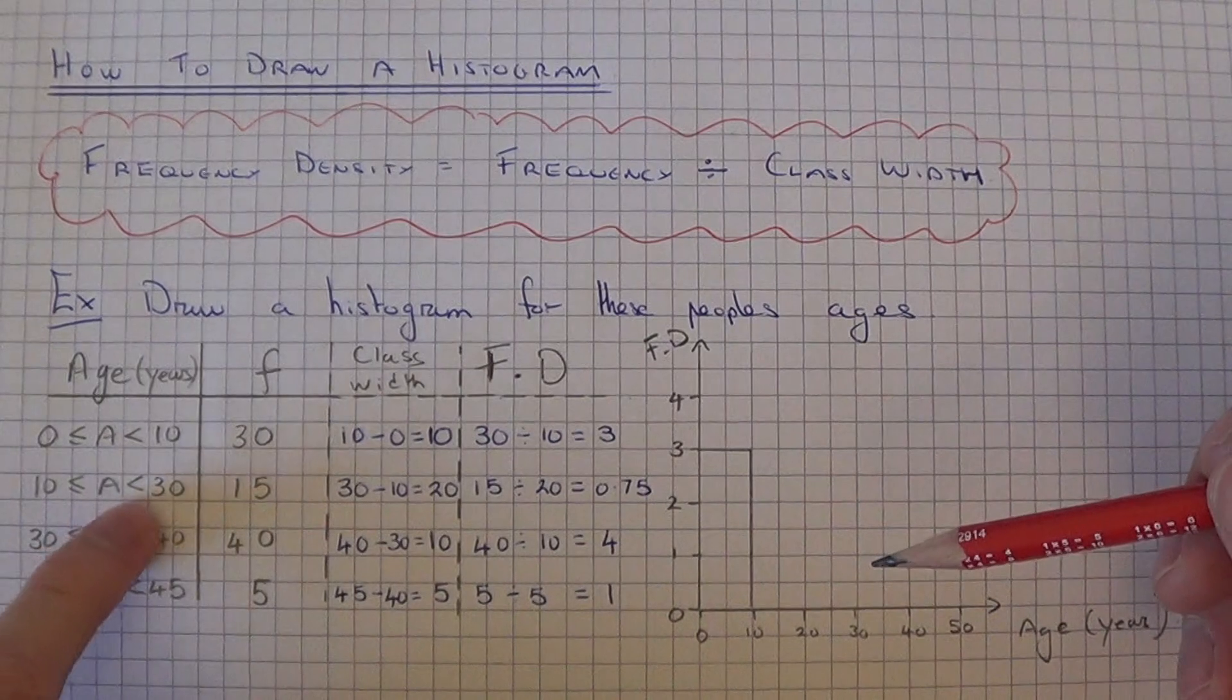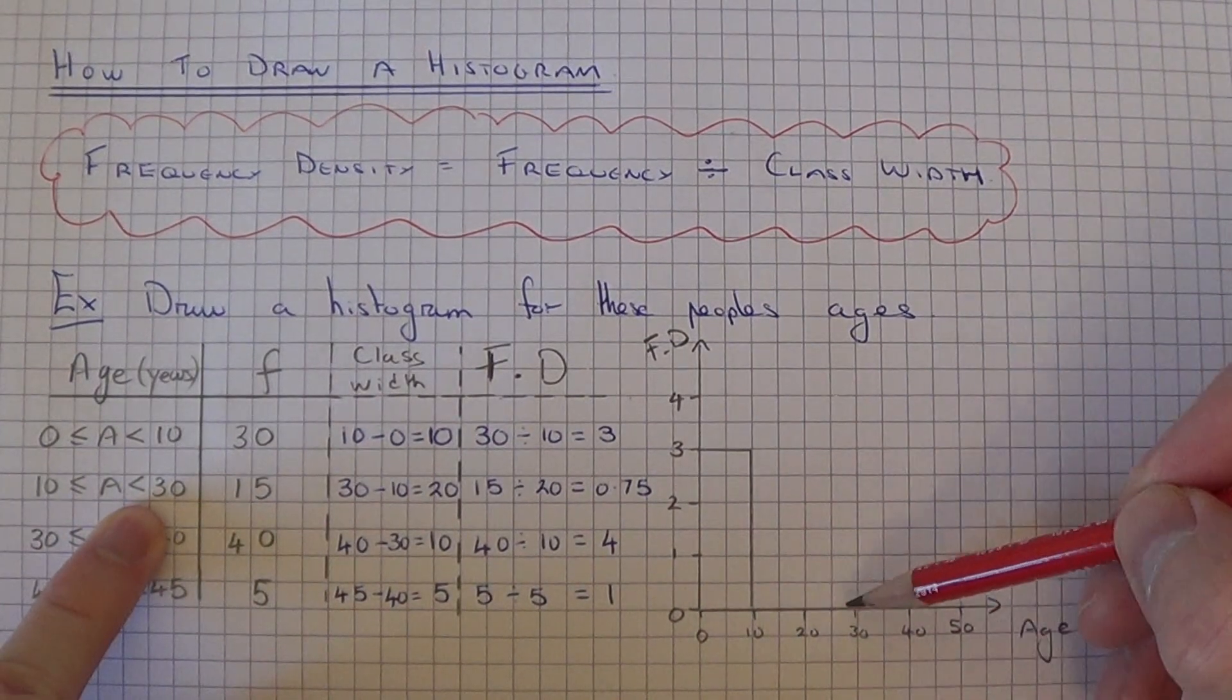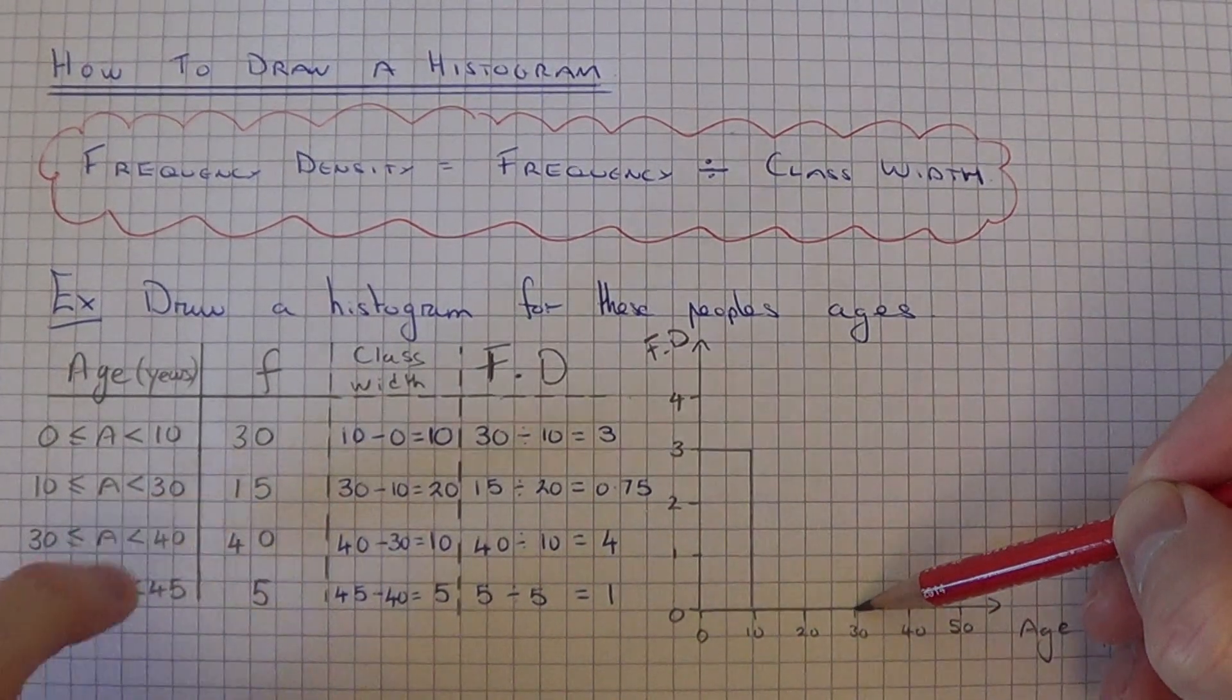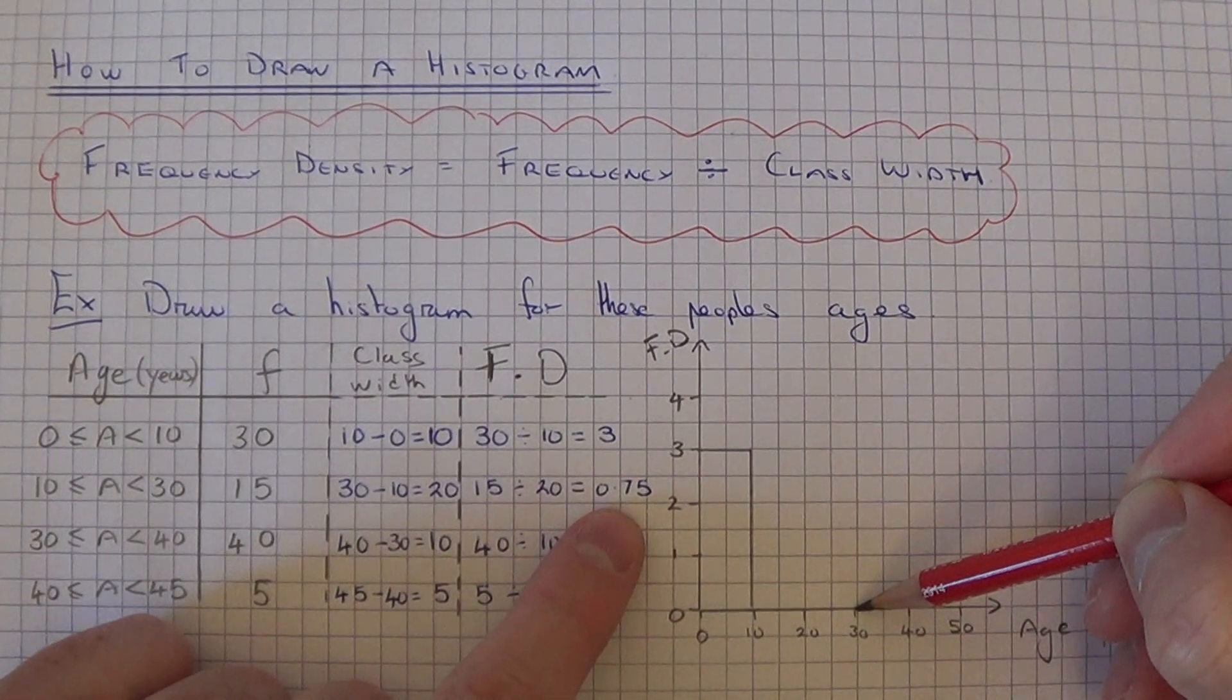For our second group, which goes from 10 to 30, our frequency density was 0.75.